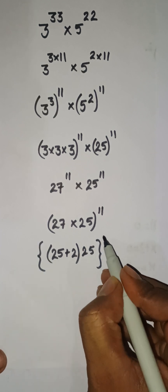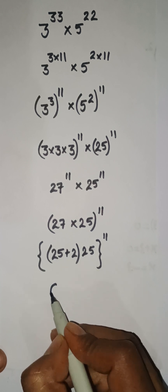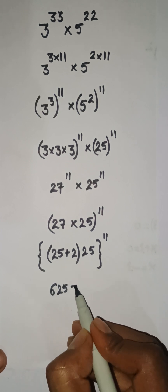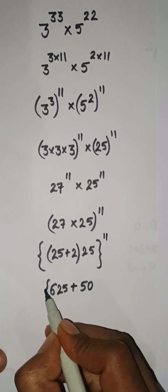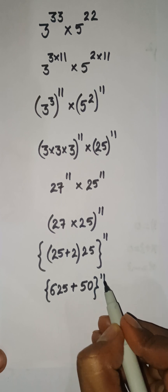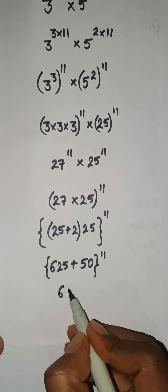So this is 25 into 25, which is 625, plus 25 into 2, that is 50, to the power 11. Now this will be added together, so we have 675 to the power 11.